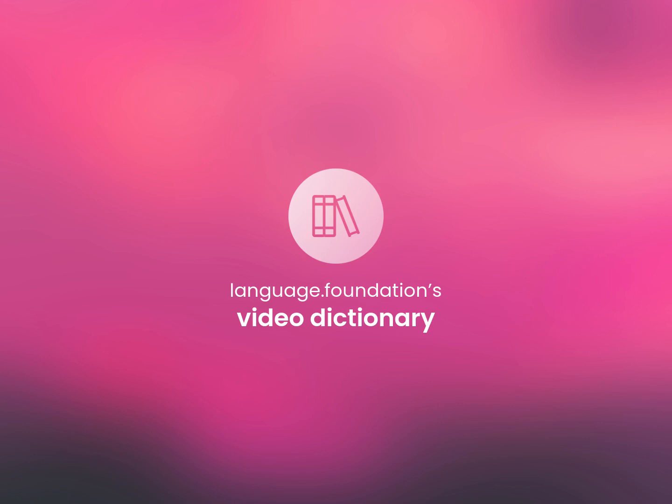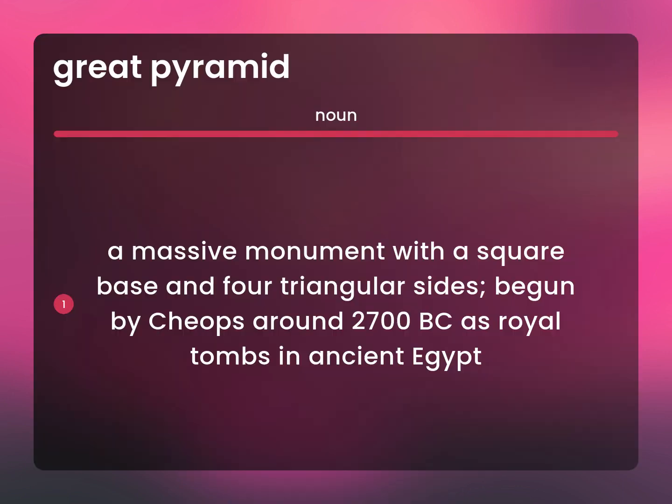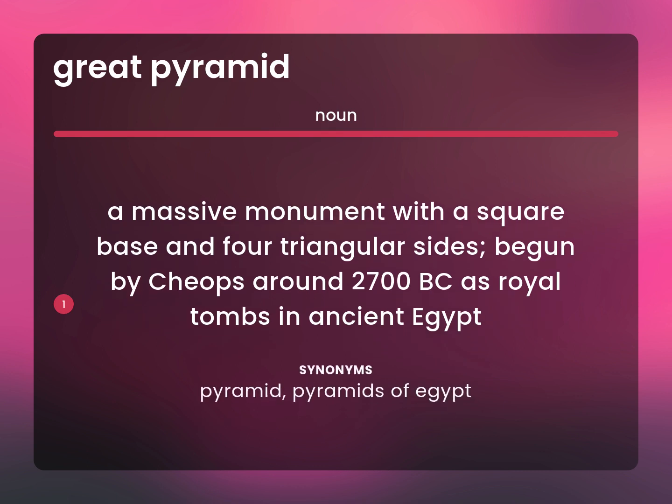Language.Foundation's Video Dictionary, helping you achieve understanding. A massive monument with a square base and four triangular sides, begun by Cheops around 2700 BC as royal tombs in ancient Egypt. Pyramid. Pyramids of Egypt.